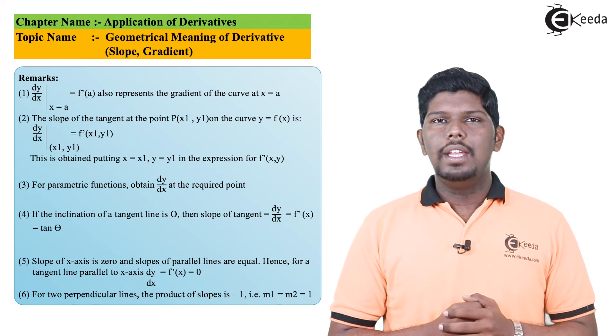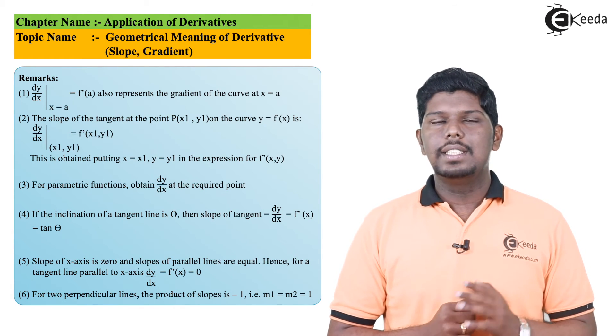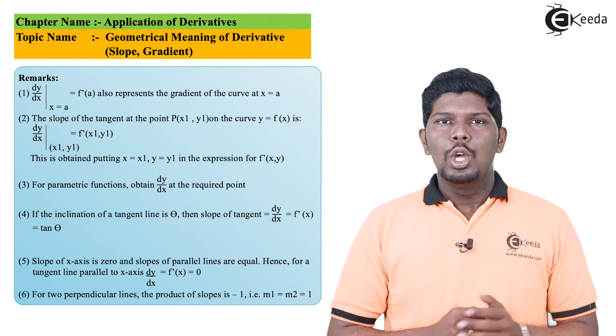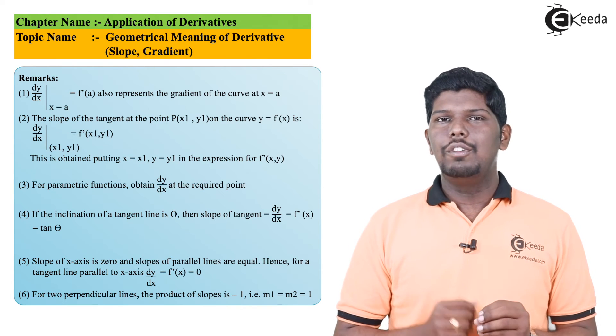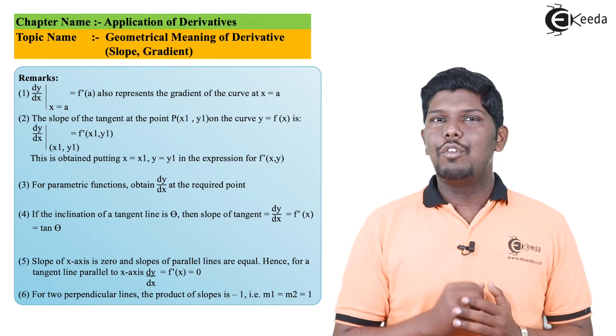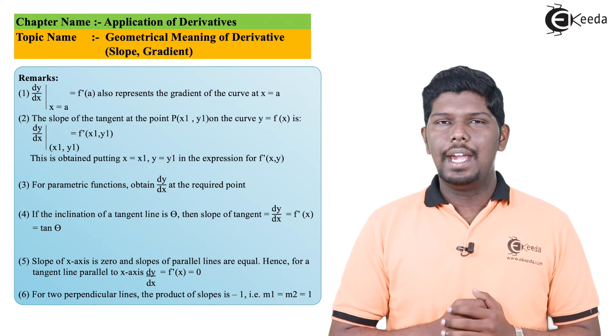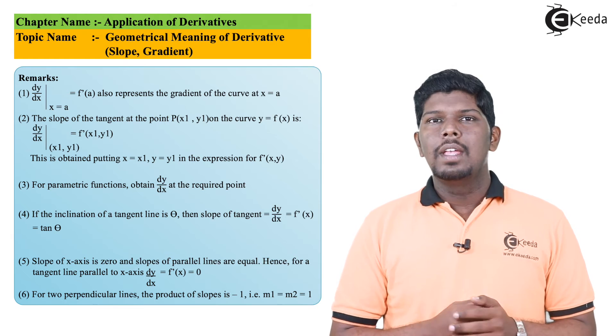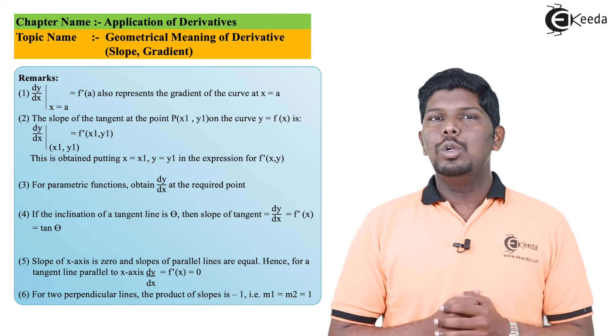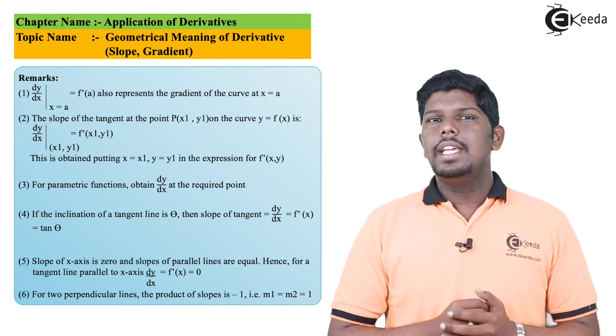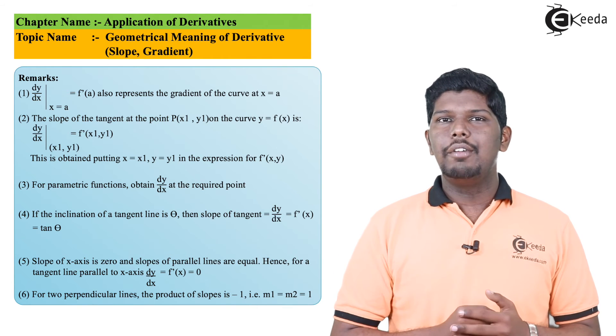Now suppose if the inclination of line with respect to positive x-axis is given, say it is θ, so you can directly write dy/dx will be equal to tan θ. As the second formula for slope of the line is nothing but tan θ, so dy/dx will be equal to tan θ.